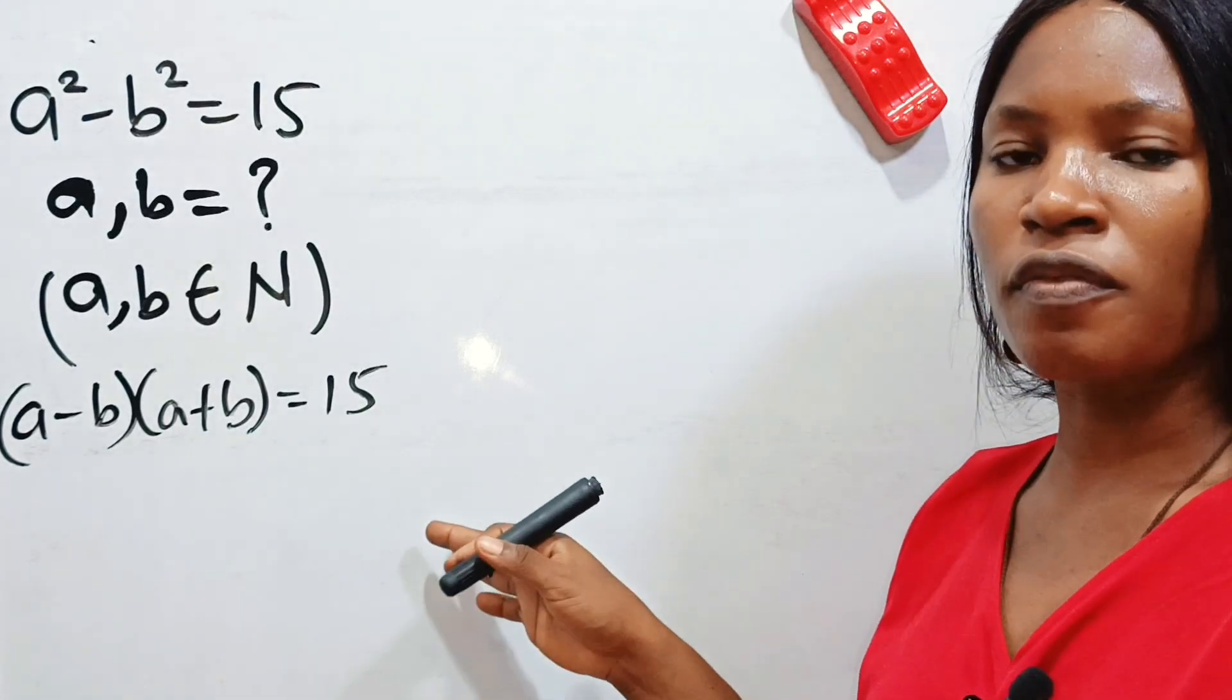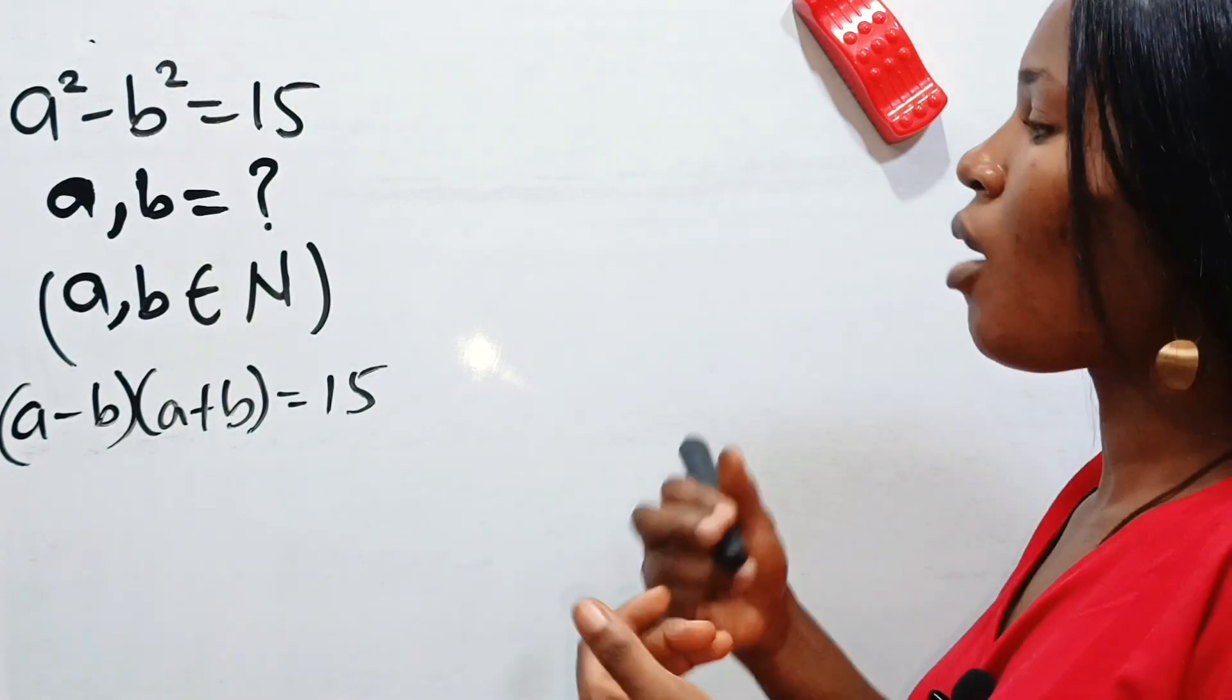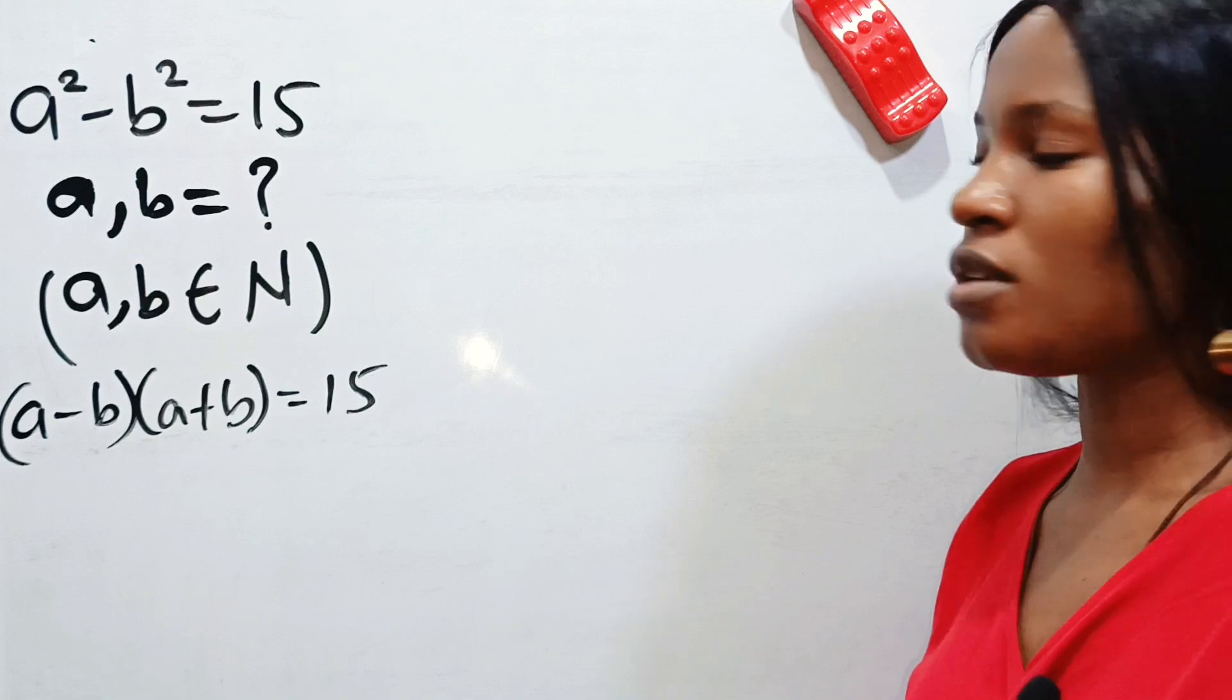Let's bring out factors of 15. Factors of 15 are 1, 3, 5, and 15.